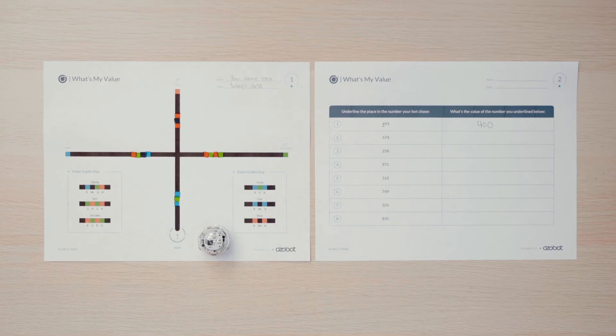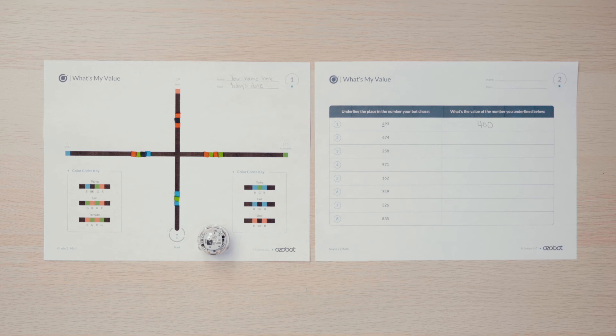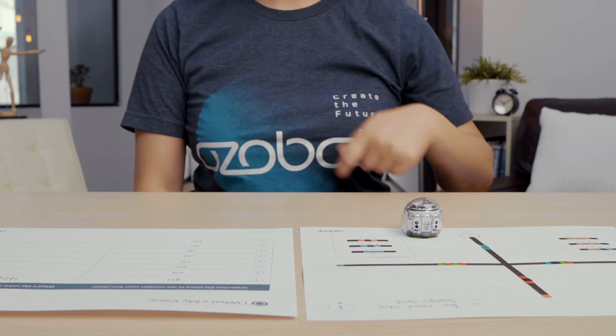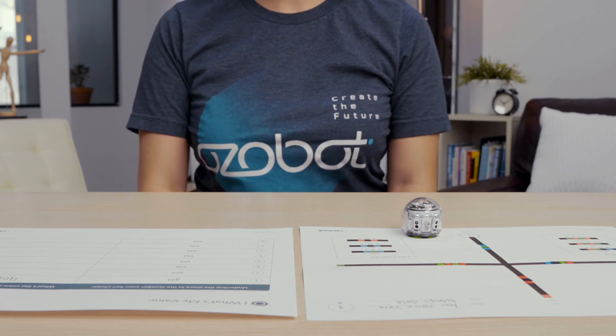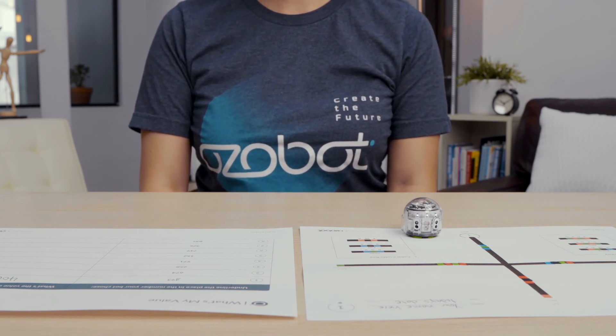Place your bot back on start and watch it move to choose a random place value: ones, tens, or hundreds. Since the bot is choosing randomly, it can choose the same place value as before.